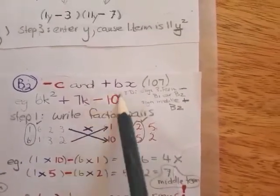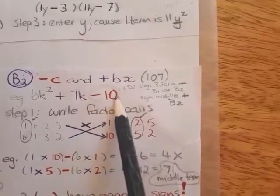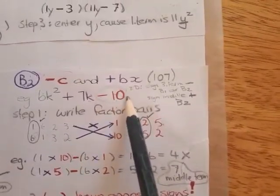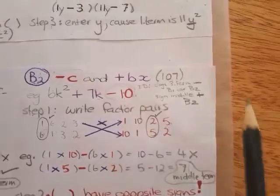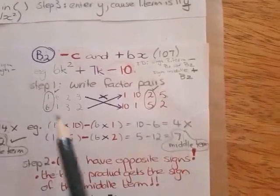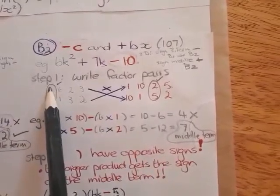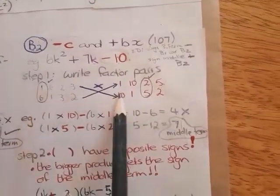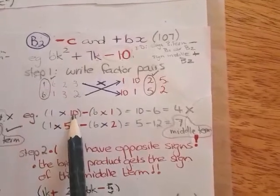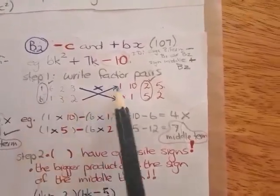Because the third term is negative, you need to now find the difference between factors. So as an example, I have chosen the first one and the first one again. So you're going to cross multiply, 1 times 10, 1 times 10, and then 6 times 1, and 6 times 1.